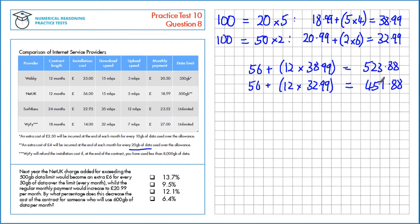Now we just need to find the percentage decrease. We have the new value here, £451. So that comes first. Subtract the old value, £523.88, divided by the old value, and multiplied by 100. That gives us negative 13.7%, which is a 13.7% decrease.